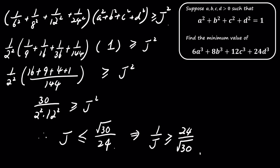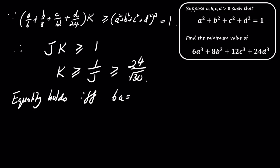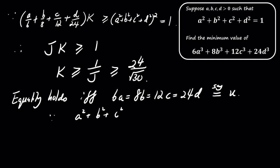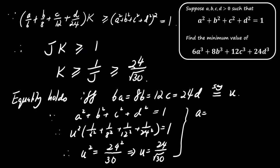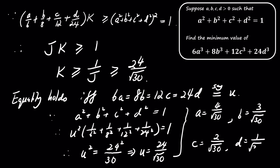Equality holds when 6a equals 8b equals 12c equals 24d. Solving these ratios, we find that a equals 4 over the square root of 30, b equals 3 over the square root of 30, c equals 2 over the square root of 30, and d equals 1 over the square root of 30.